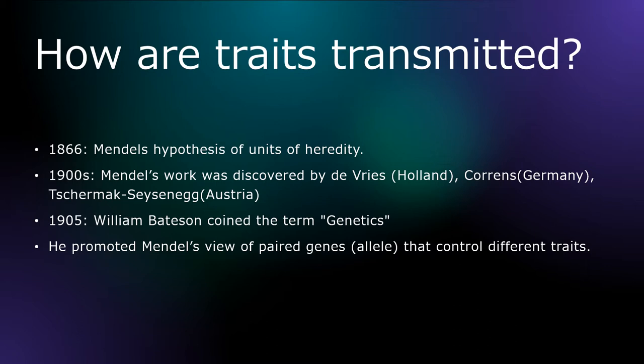William Bateson is the one who coined the term genetics. He was a British scientist who promoted Mendel's view of paired genes controlling different traits. Earlier, it was assumed that phenotypical traits were related to some component, but at that point people did not know about DNA or genes — they could only speculate that a trait was associated with something without knowing what that something was. They proposed these units of heredity.